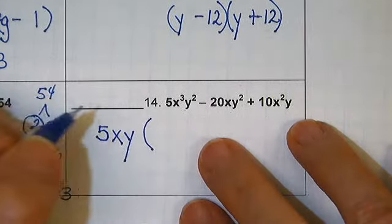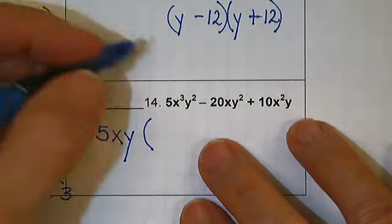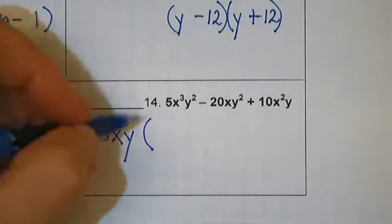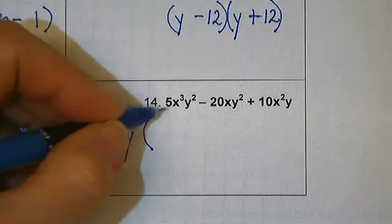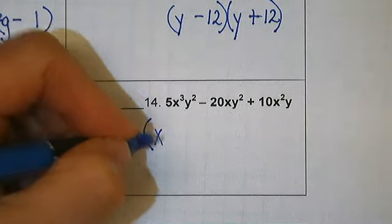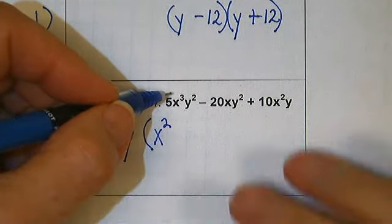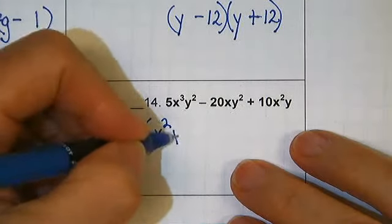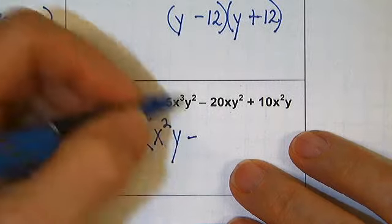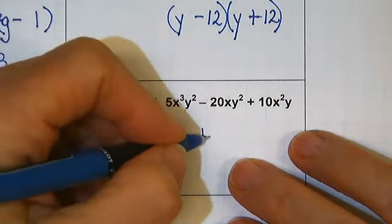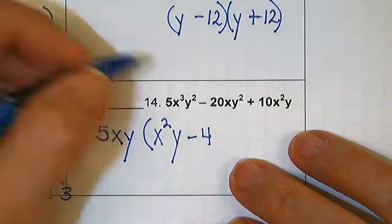What's going to be left? Where 5 times 1 is 5, x times x² gives me x³, y times y gives me y² minus 5 times 4 gives me negative 20.